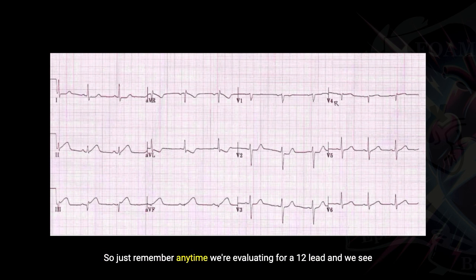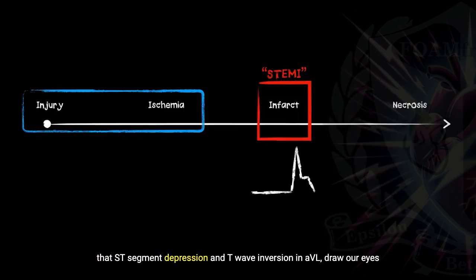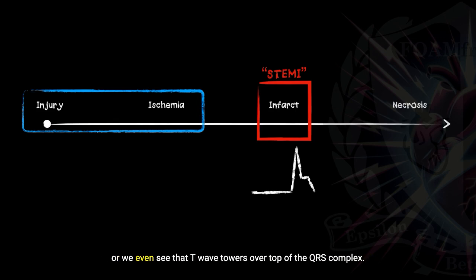Anytime we're evaluating a 12-lead and we see that ST segment depression and T wave inversion in AVL, draw our eyes down to the inferior leads. If we see straightening of that ST segment or the T wave towers over the QRS complex, that should be concerning for those early injury and early ischemia patterns that we see before a STEMI is going to show up.